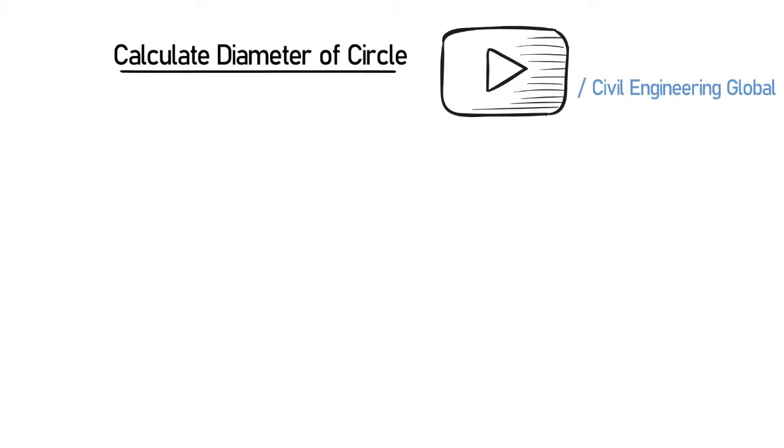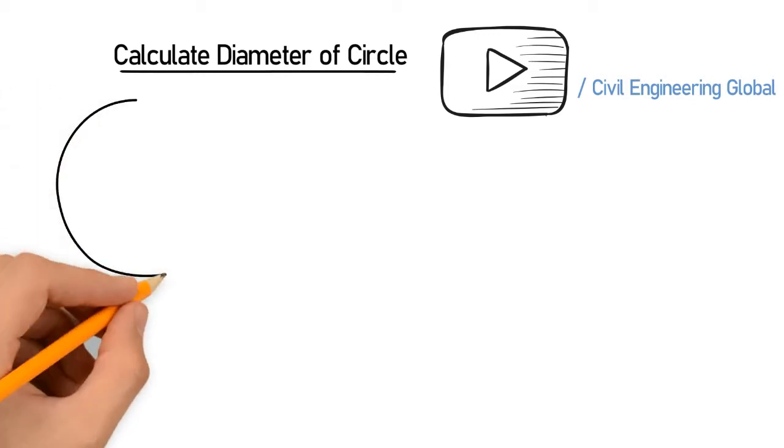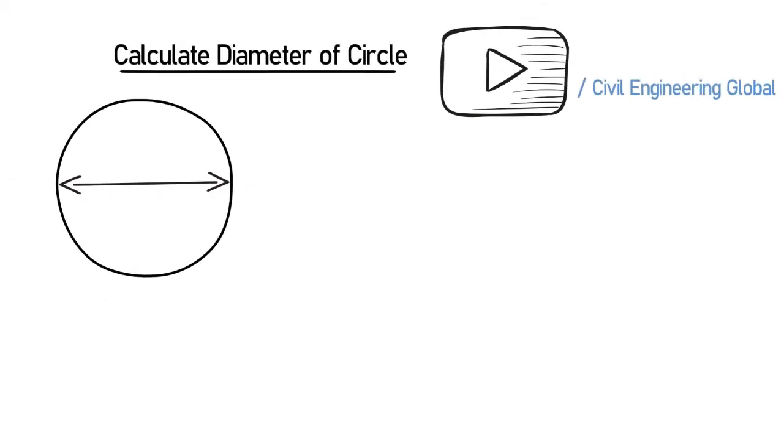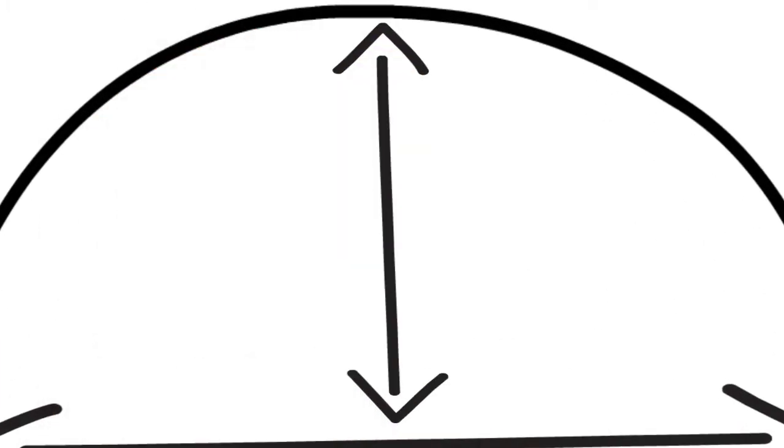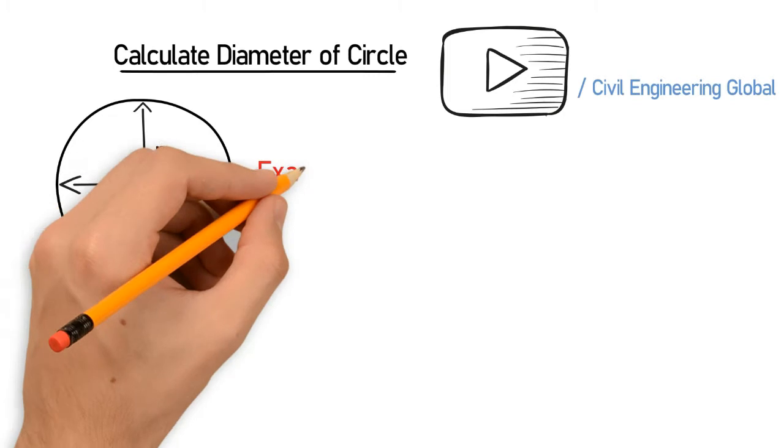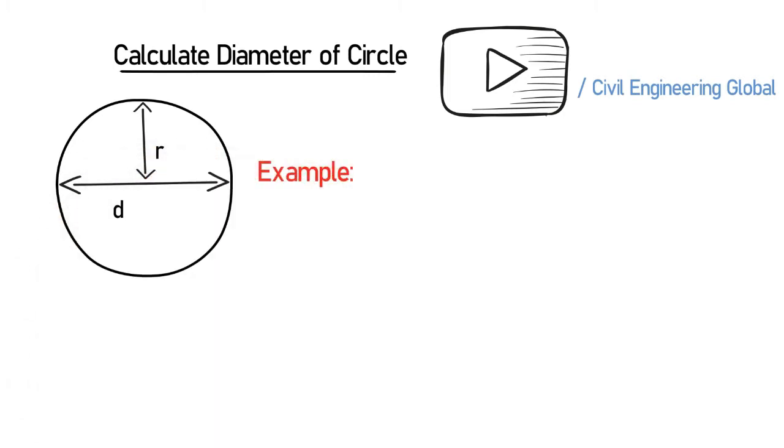First of all, let's draw the circle. This is the diameter, denoted by D, and this is the radius, denoted by R. In this example, we have radius equal to 100 meters, diameter which is unknown.